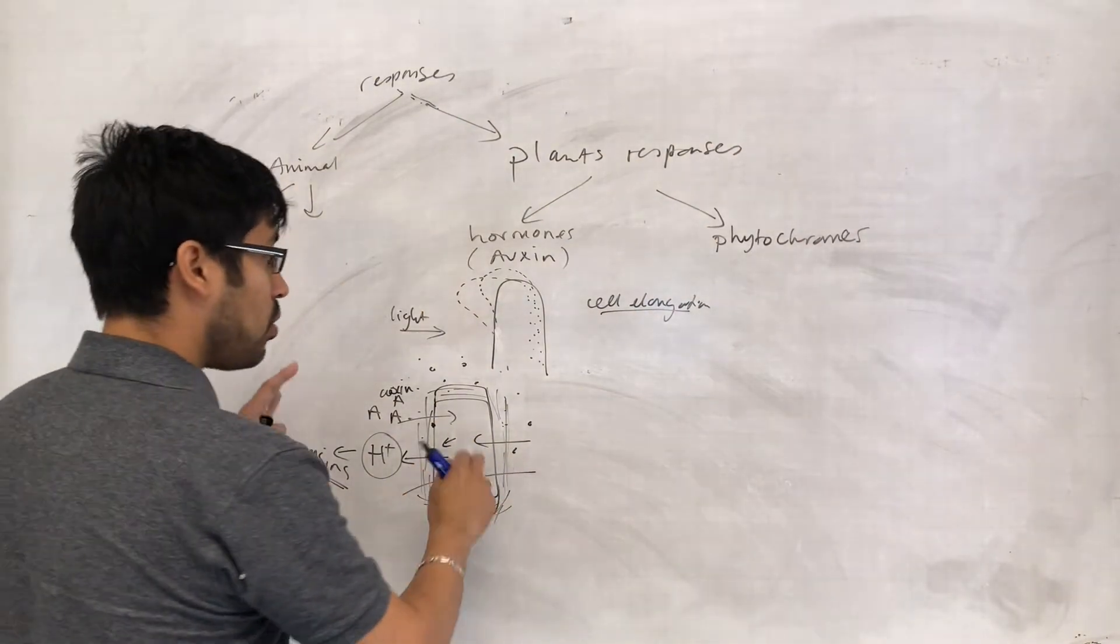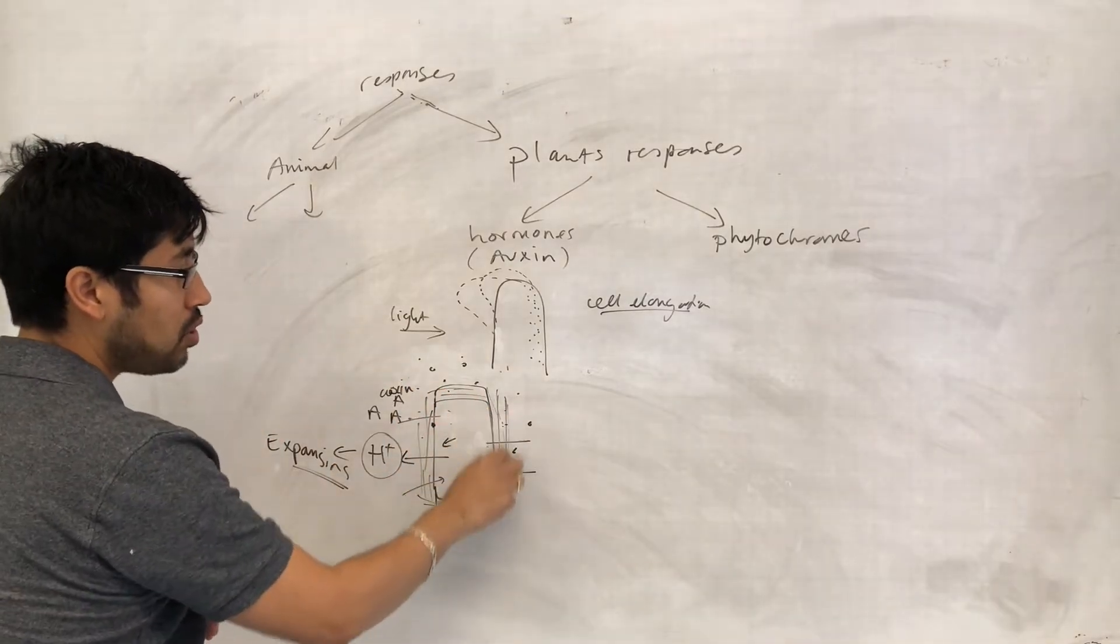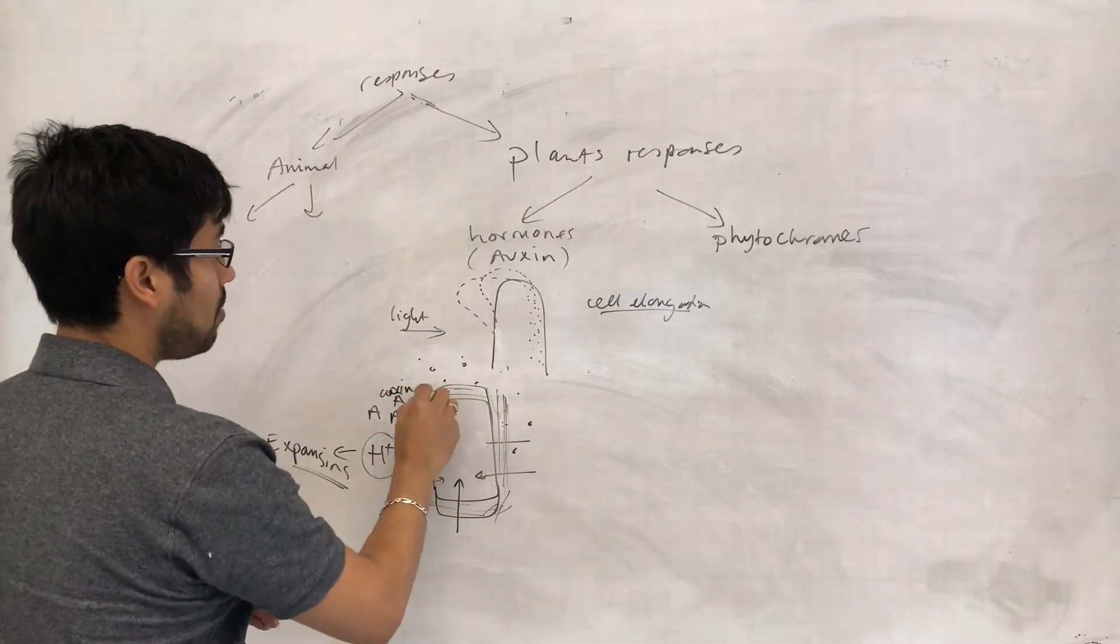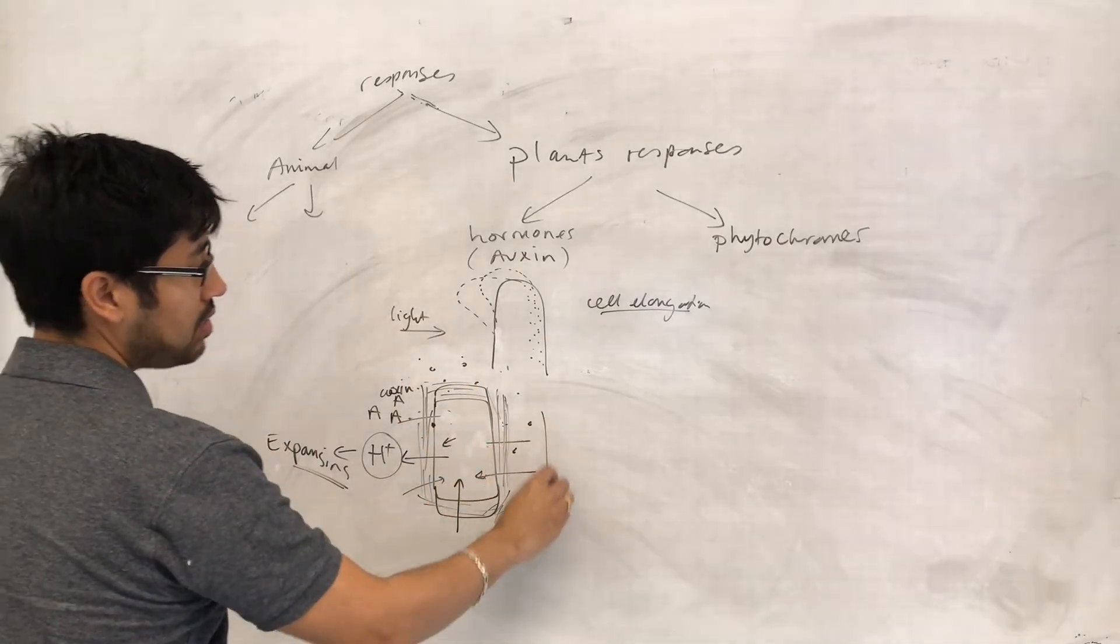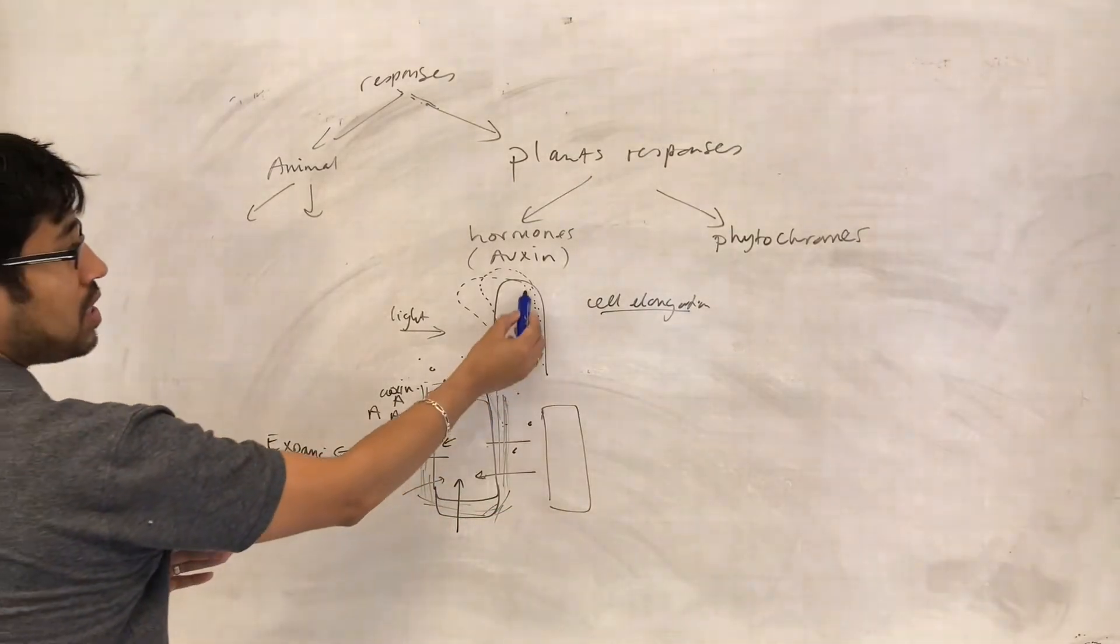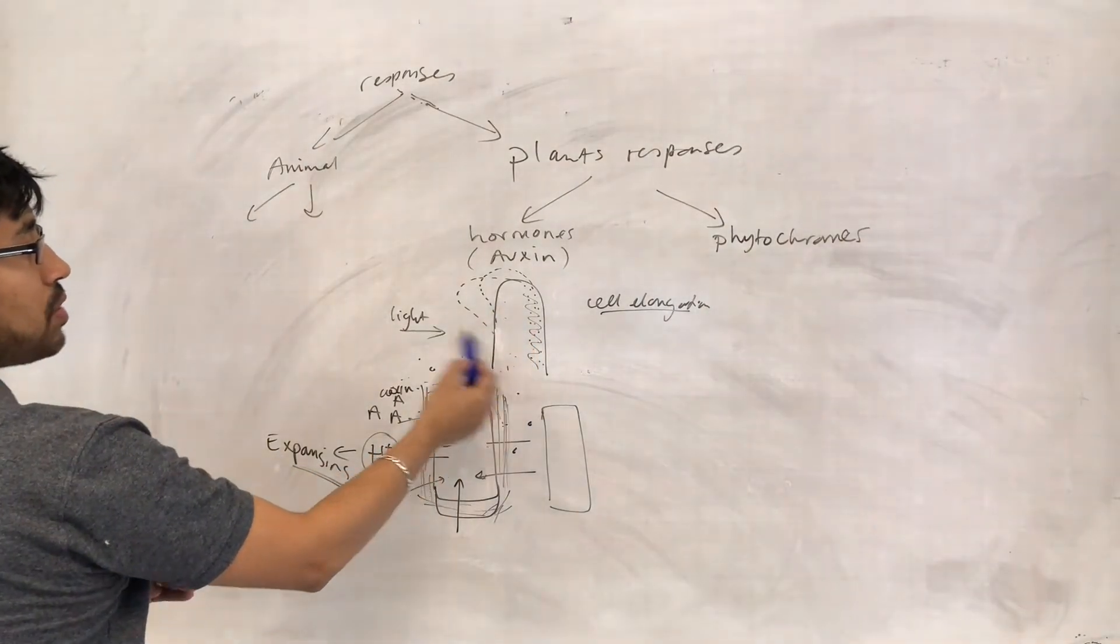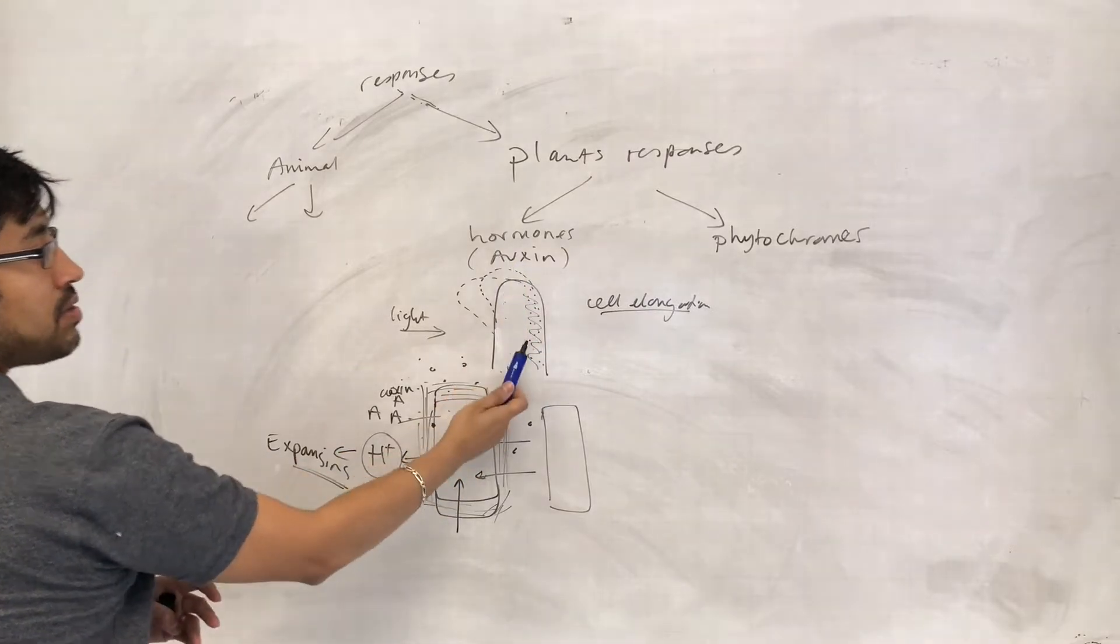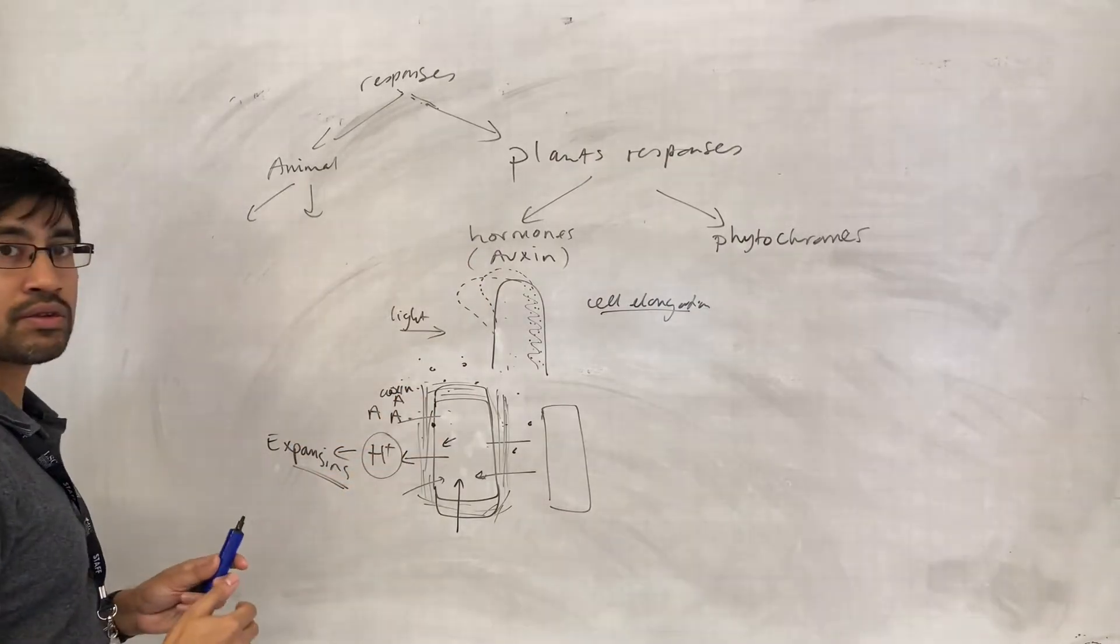And when that process stops, then the bonds between the molecules of the cell wall can reform at a slightly different place and become the new fixed cell wall. But now this cell is a little bit more elongated than it used to be. Remember these effects are all happening here on this side where there's more auxin. Where there's less auxin, because of the light, this is not happening. And so the cells here are getting longer, the cells here are staying pretty much as they are, and so the shoot overall bends towards the light.